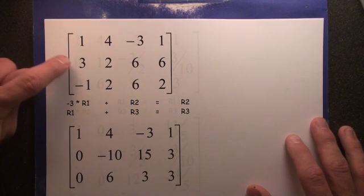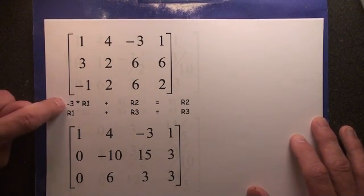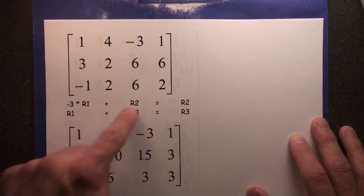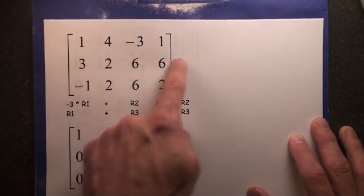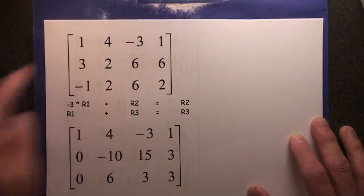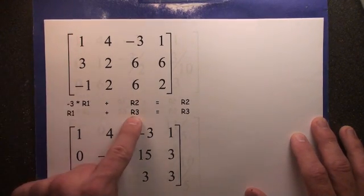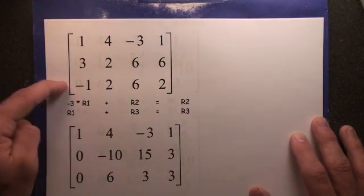Now our next goal is to create a 0 right here. So we're going to take negative 3 times row 1, we're going to add that to row 2 to create the 0, and that's going to give us a new row 2. At the same time, we're going to take row number 1 plus row number 3, and that's going to give us a new row number 3.